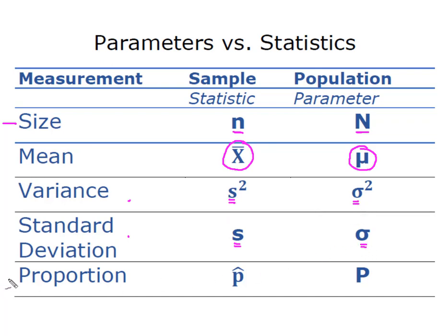And then finally for the proportion for the sample we use p hat and this little caret over top of that p is the hat. So we have p hat for the sample proportion and then capital P for the population parameter or the population proportion.